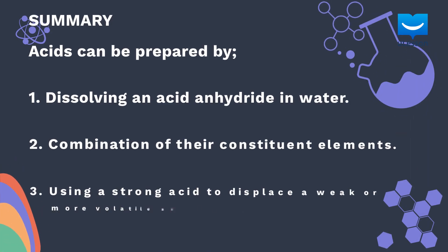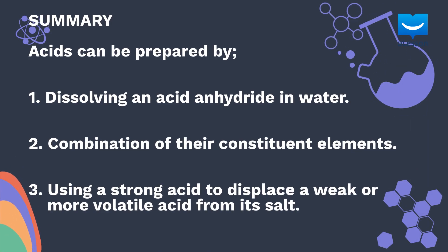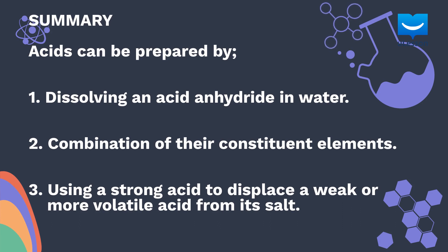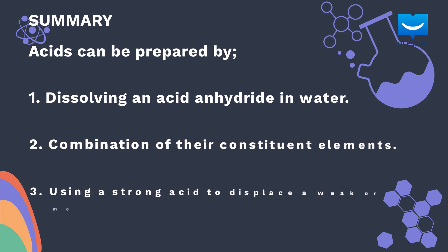In summary, acids can be prepared by: 1) dissolving an acid anhydride in water, 2) the chemical combination of their constituent elements, and 3) using a strong acid to displace a weak or more volatile acid from its salt. In our next lesson we shall be talking about the amazing ways in which acids can be used.